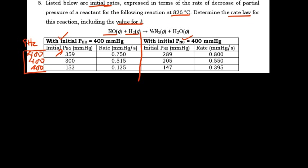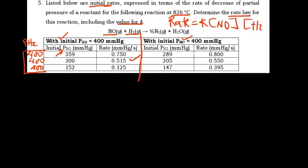To determine the reaction order with respect to nitrogen oxide, we can pick any two experiments. Looking at the values we have — 0.5, 0.750, 0.515, and 0.125 — the ones that give a better number in terms of division are experiments 2 and 3. Our rate law can be expressed as rate = K[NO]^M [H₂]^N. So rate 2 will be divided by rate 3.